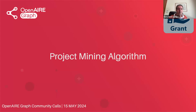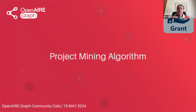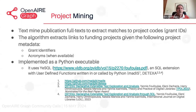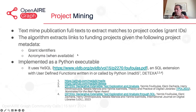I'll go into more depth on the project mining algorithm since today's talk is about enrichment by mining and funders information. The project mining algorithm idea is to mine the full text of publications in the graph in order to extract matches to project codes and grant IDs. The algorithm links publications to funding projects. To do that, it relies on metadata we get from funders on grant identifiers and acronyms if available. There's other information provided by funders — titles, dates — but the mining works primarily with grant identifiers.